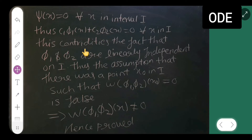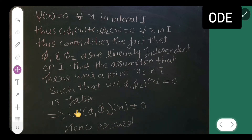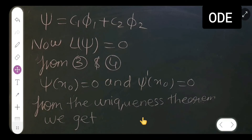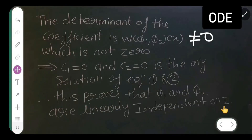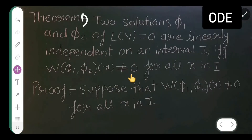Thus c1·phi 1(x) + c2·phi 2(x) = 0 for all x in I. This contradicts the fact that phi 1 and phi 2 are linearly independent on I. So the assumption that there exists a point x₀ in I with W(phi 1, phi 2)(x₀) = 0 is false. Therefore W(phi 1, phi 2)(x) ≠ 0, and both parts of Theorem 1 are proved.